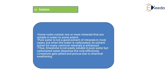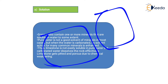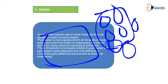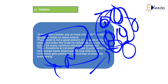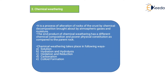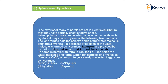The first is solution. Some rocks contain one or more minerals that are soluble in water. Pure water is not a good solvent of minerals in most cases, but when the water is carbonated, its solvent action on many common minerals is enhanced. Limestone is not easily soluble in pure water, but carbonated water dissolves it effectively. Limestone gets pitted and porous due to chemical weathering. The carbonate water dissolves the calcite content in the limestone, the dissolved material leaves the space empty, forming small vesicles — this is called pitting.